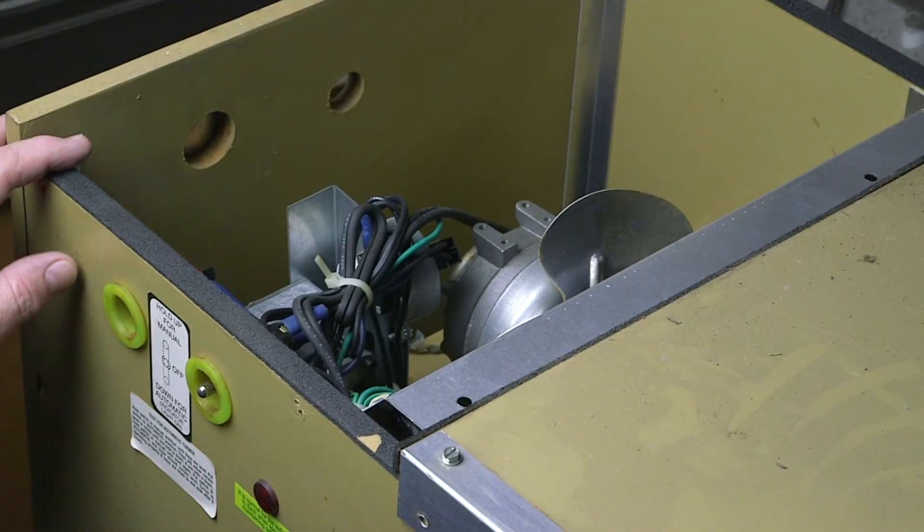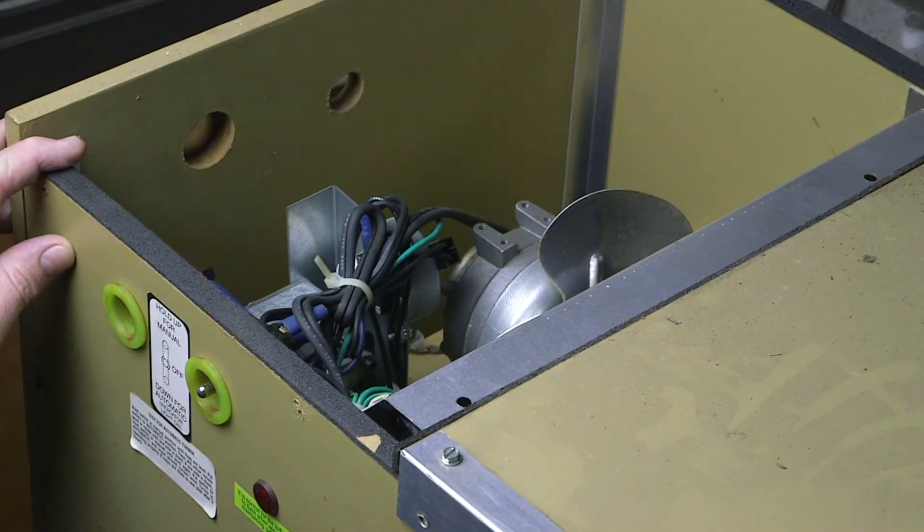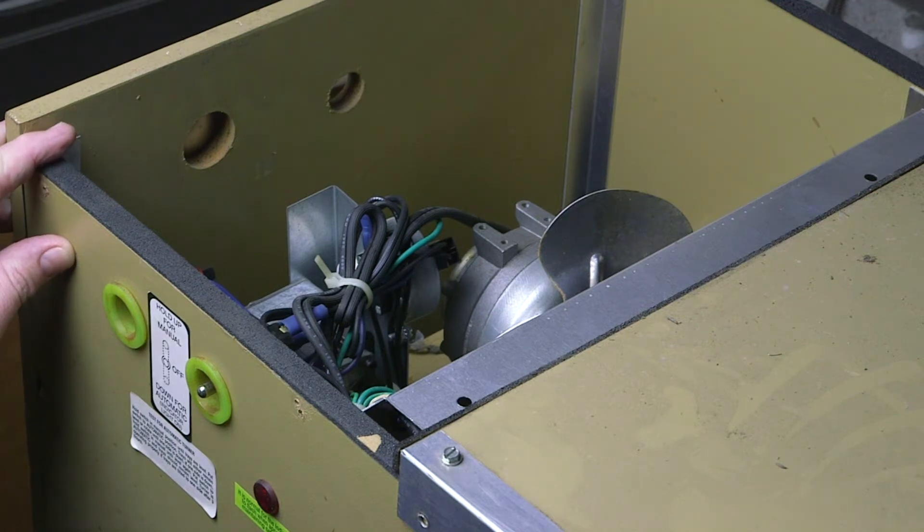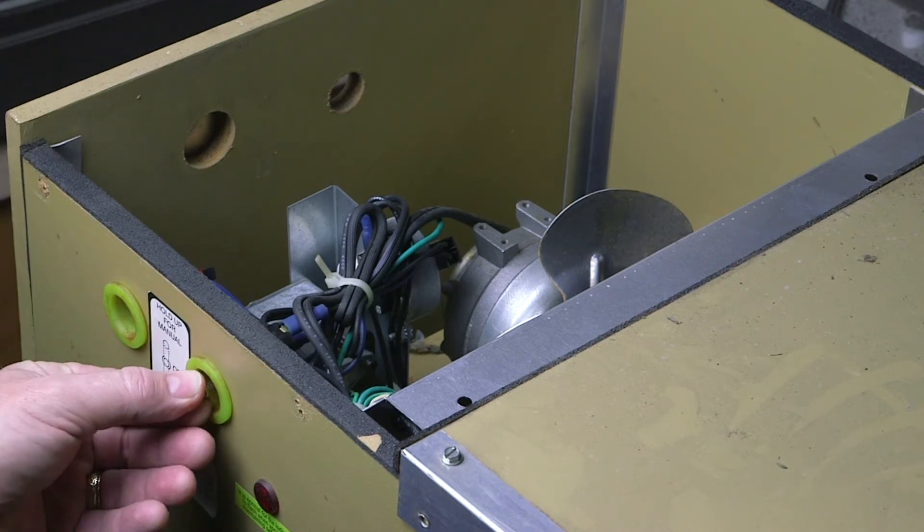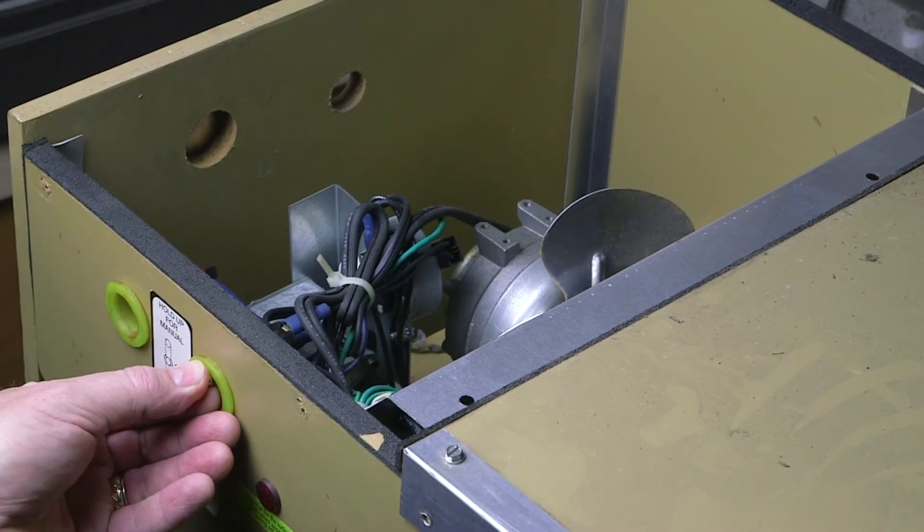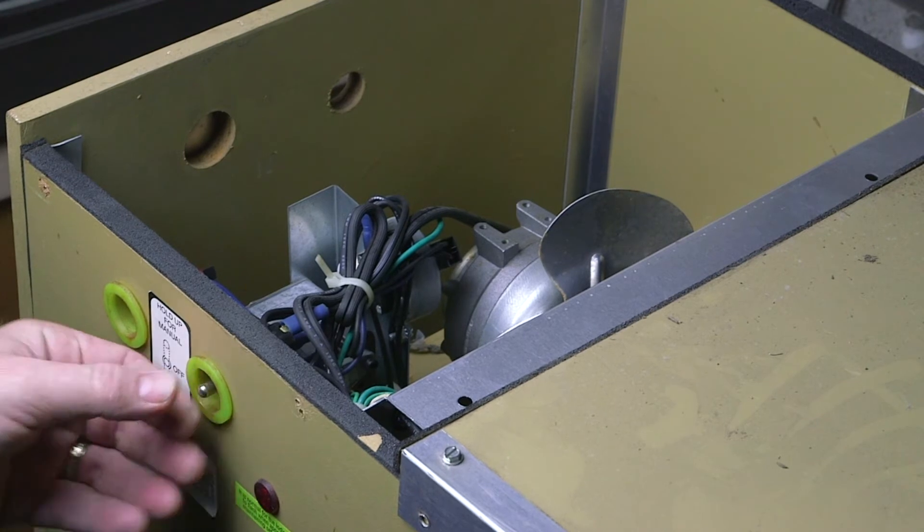We get a lot of calls about troubleshooting turners on old GQF incubators and the solution is pretty simple. If you take the silver toggle switch and flip it up to manual, if your turner moves...